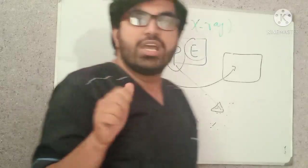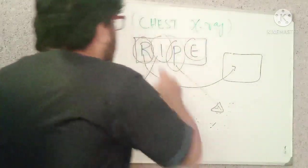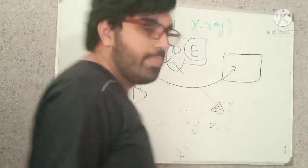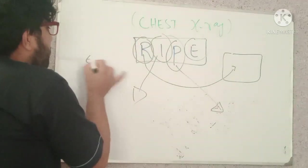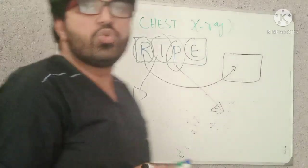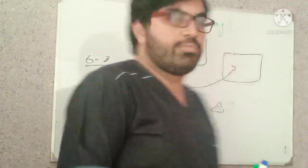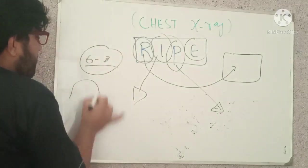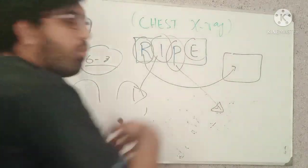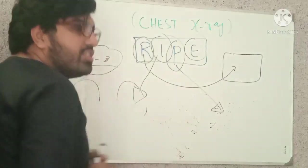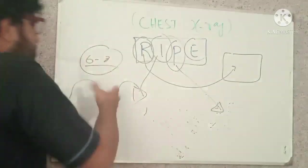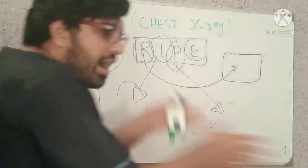So the film should not be rotated — that is point one. Point two: the film should be a full inspiratory film. On a good inspiratory film you can appreciate six to eight posterior ribs. If you cannot appreciate these ribs and the diaphragm appears more convex, this is a poor inspiratory film.